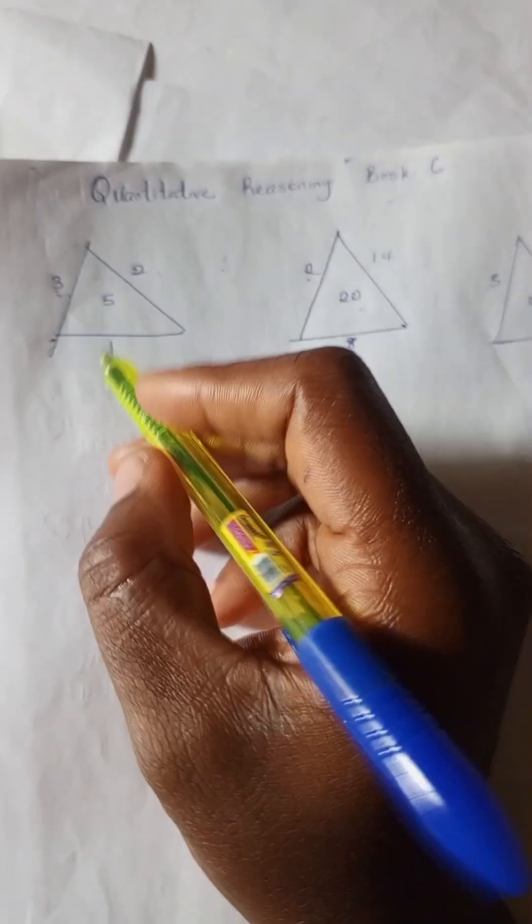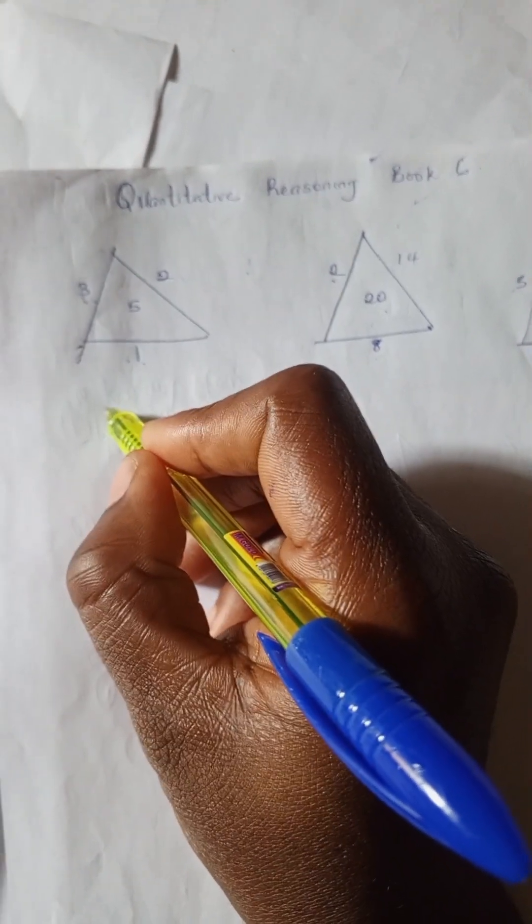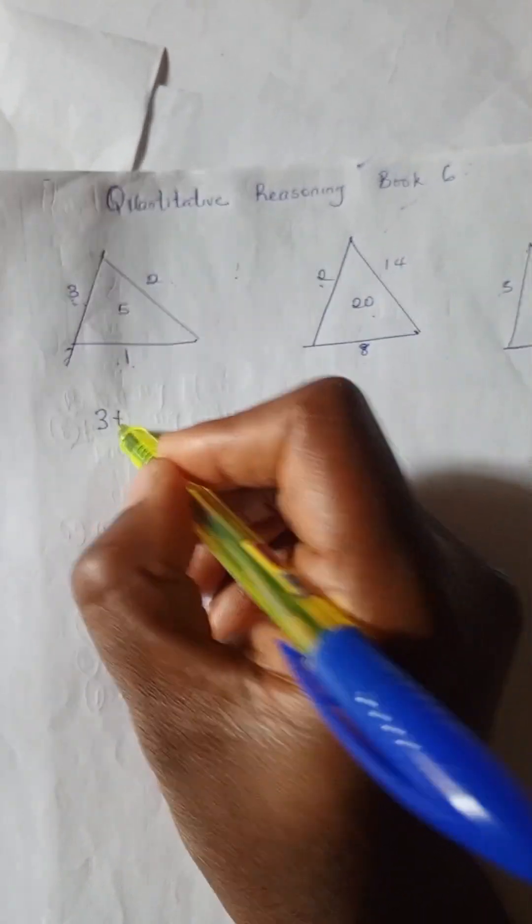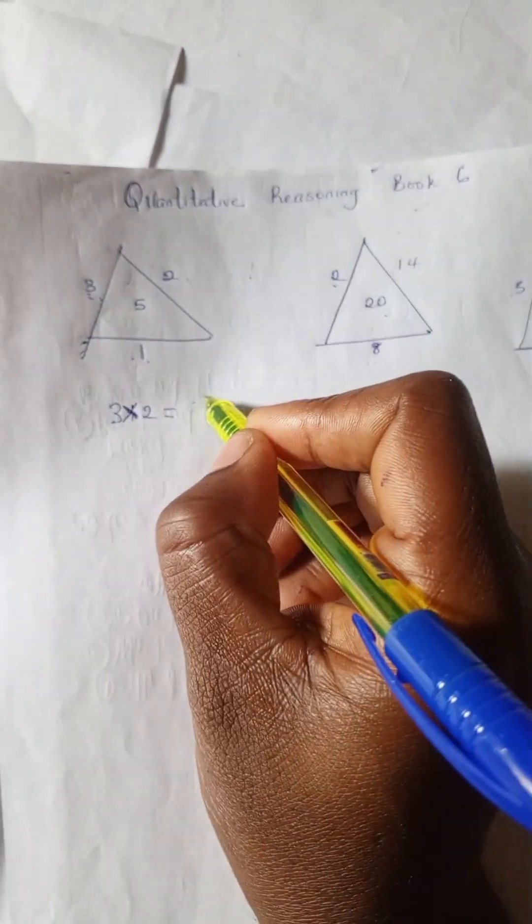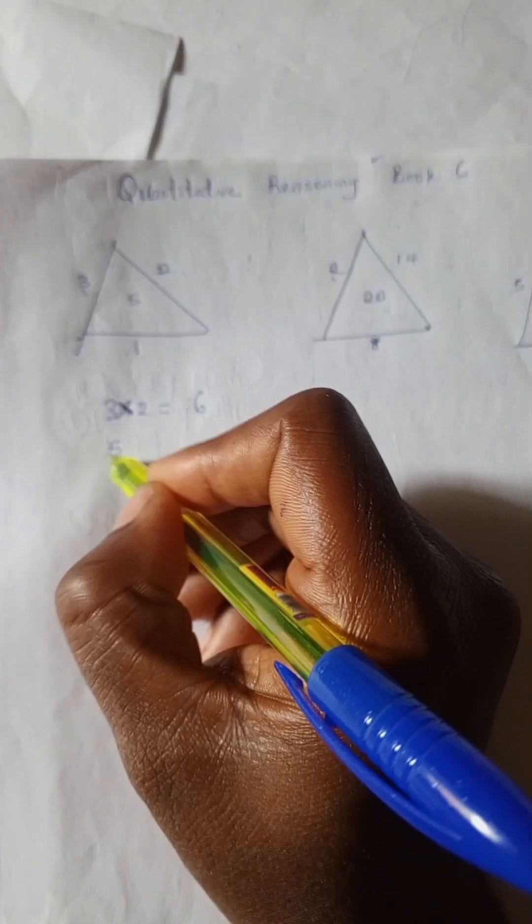We're going to work with the first example. 3 times 2 is 6, and 5 plus 1 is 6. For any part, we need this.